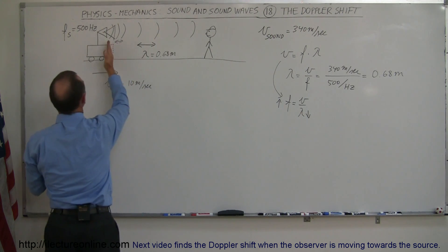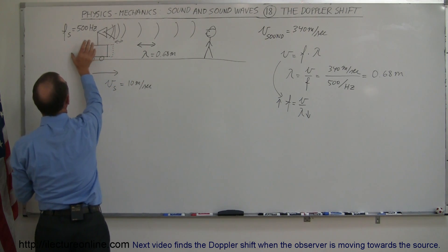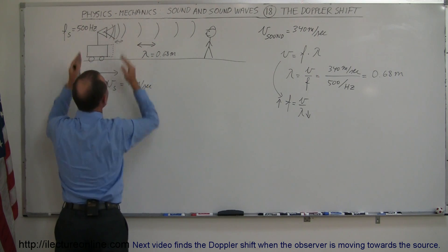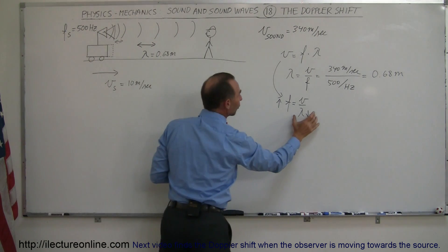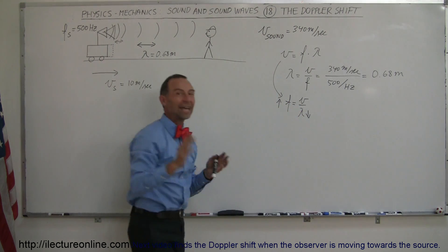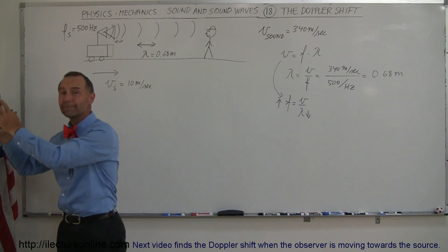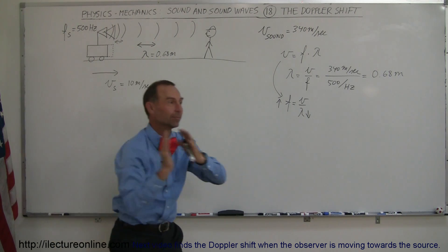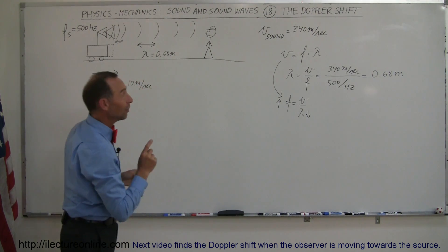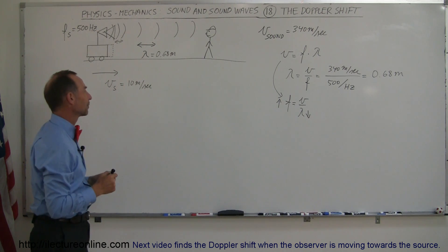If the source of the sound is moving away, it causes the wavelengths to be farther apart. Farther apart means greater wavelength, which means smaller frequency, and the frequency goes down. So you hear a higher frequency and then a lower frequency as the car drives by. The question is: how does that frequency change? How do we calculate that?